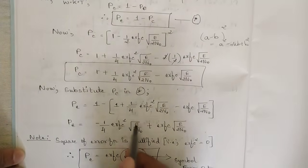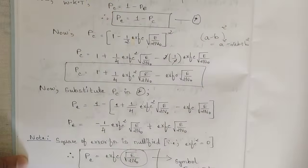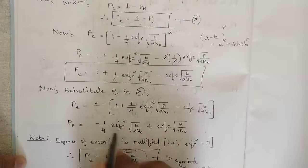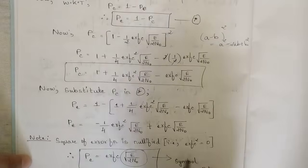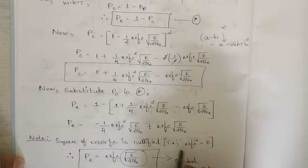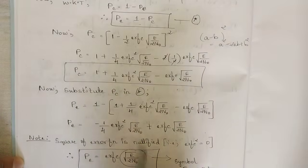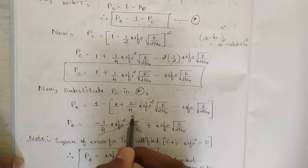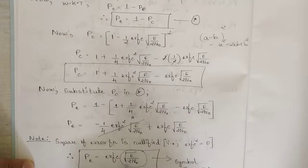Note that the square of the error function term is nullified by the property that erfc² ≈ 0 for large arguments. So the final error probability simplifies to PE = erfc(√(E/2N0)).